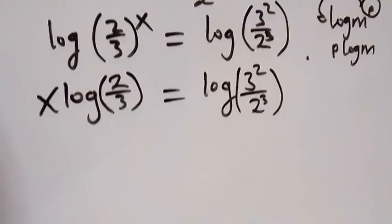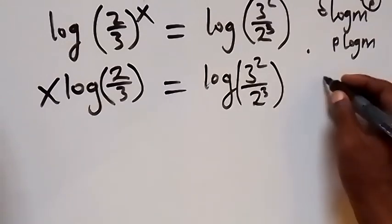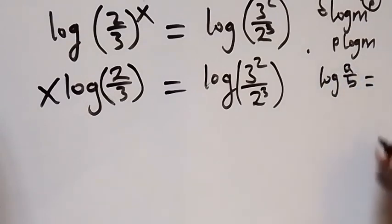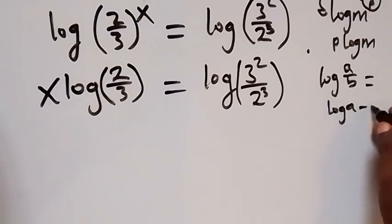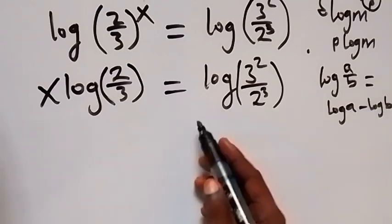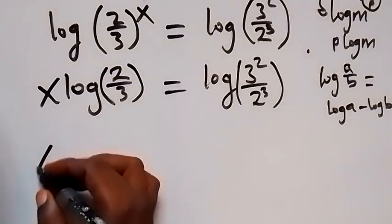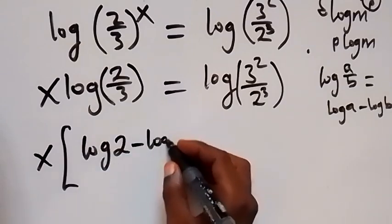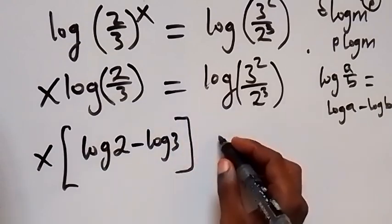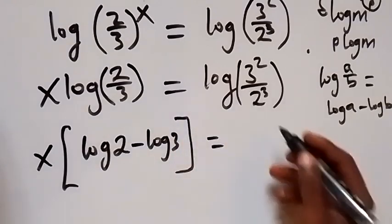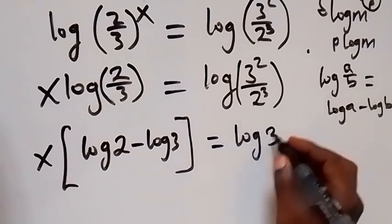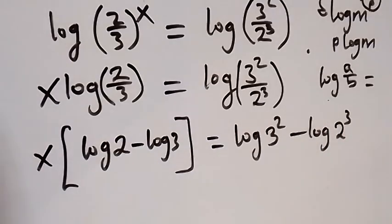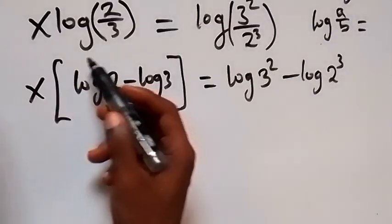In the next step we apply the log quotient rule: log(a divided by b) can be separated into log a minus log b. Applying this to both sides, we have x times (log 2 minus log 3) on the left, and on the right we have log 3 squared minus log 2 cubed.